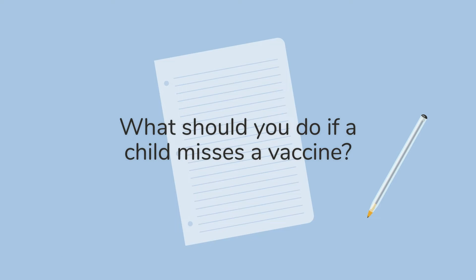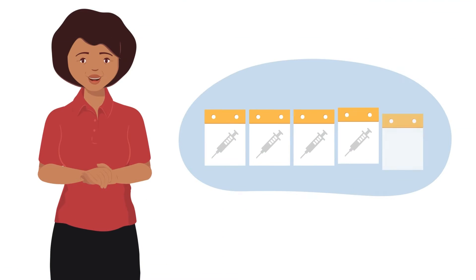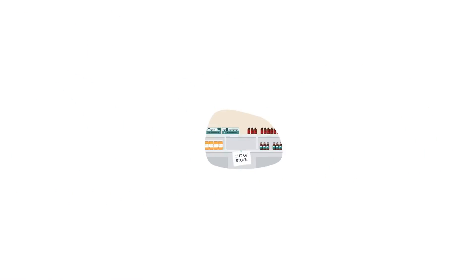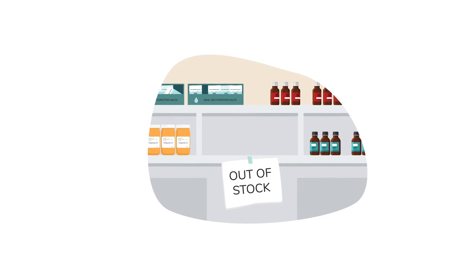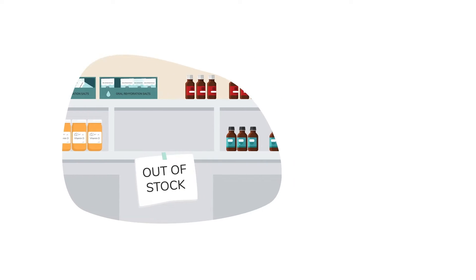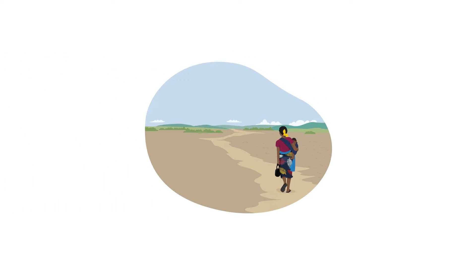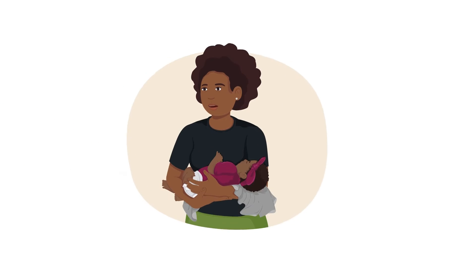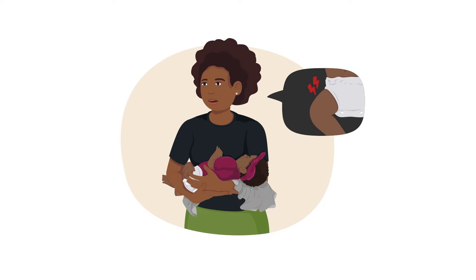What should you do if a child misses a vaccine? There are many reasons why a child may miss a vaccine. Sometimes the vaccine is not available at the time of the child's visit. A family may have trouble getting to the health facility for a vaccine. A caregiver may be nervous that the vaccine will be painful and not want to bring their child to get vaccinated at all.